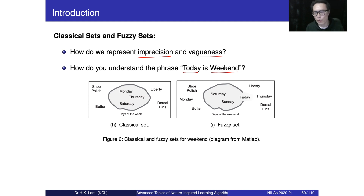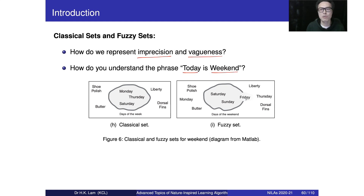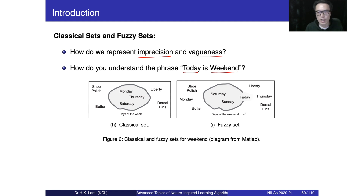Our mood for the weekend is building up as we approach it. When it gets to Friday, we have a stronger feeling about the weekend. Maybe Friday afternoon we still feel the weekend is coming, and Friday evening we might even claim it is the weekend. So in reality, it is not just zero or one — we have something in between. In the fuzzy set, we use zero to one to indicate how much an object belongs to the set.